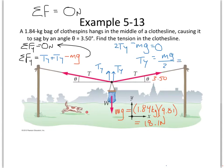mg, that's our weight force. That's 18.1 newtons divided by two. And that should give us 9.05 newtons. That's going to be our T_Y.